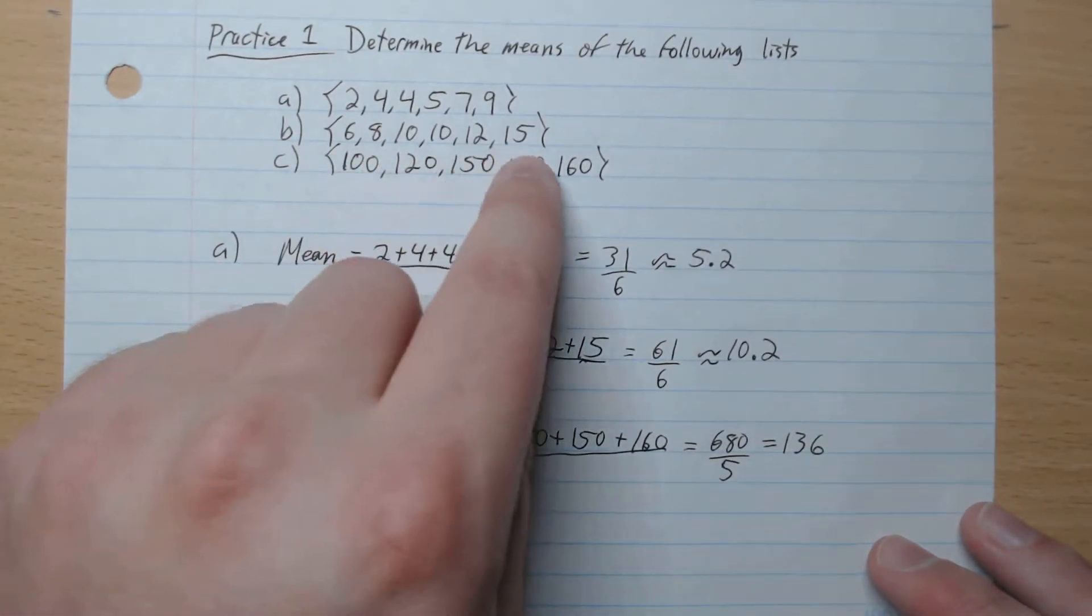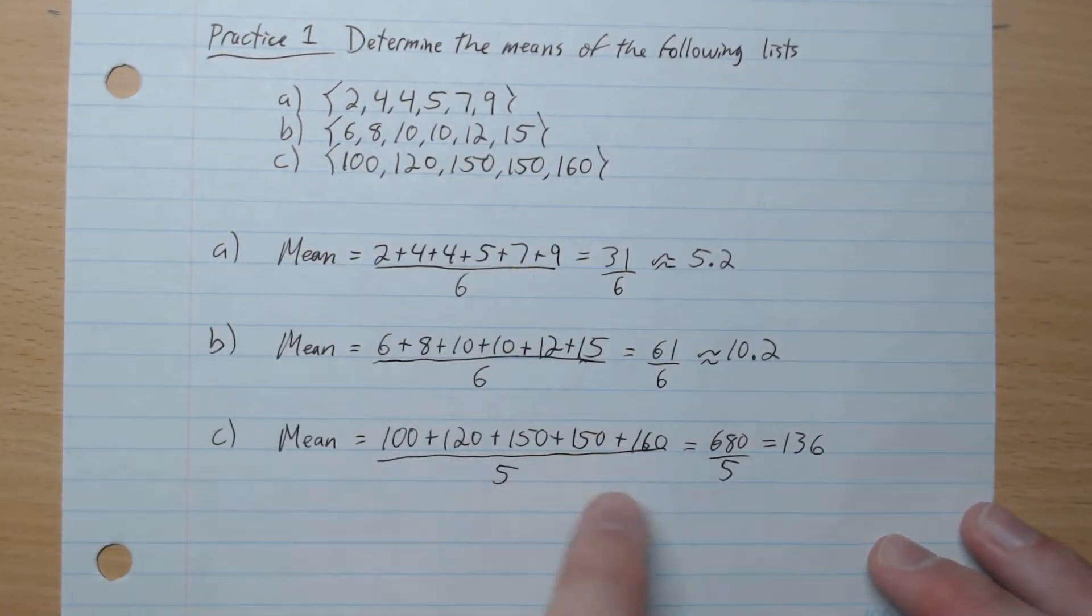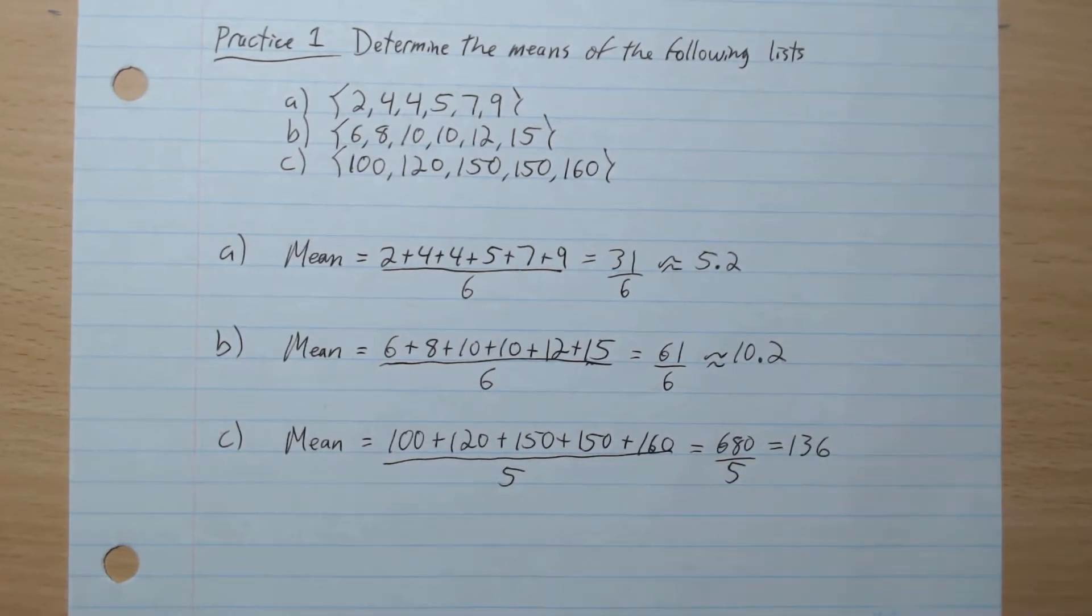C, we add up the numbers, and this time there are 5 of them, so divided by 5. So 680 over 5 is 136, like that. So it's that easy.